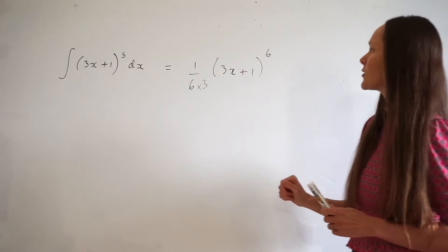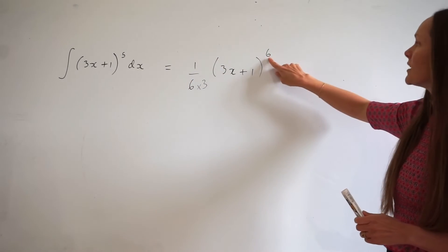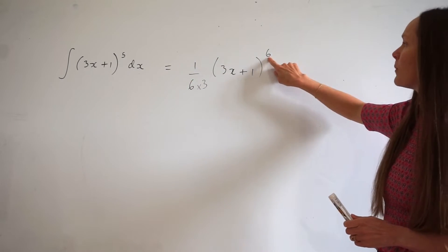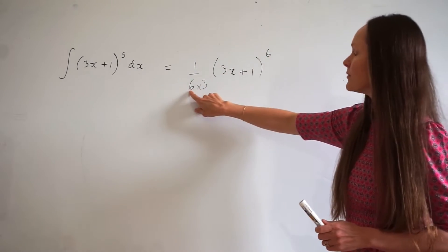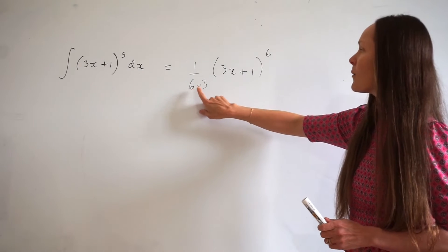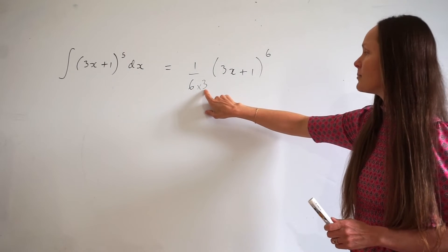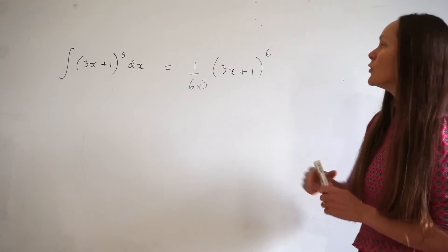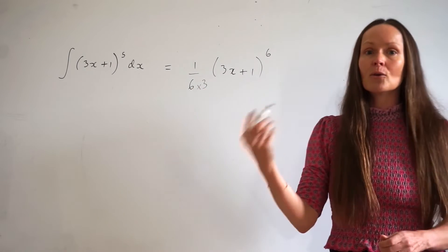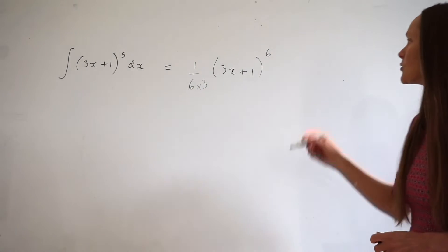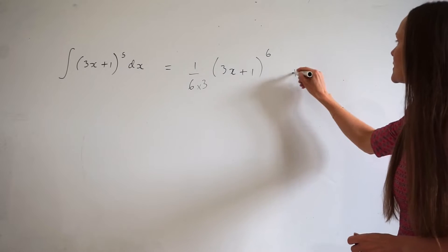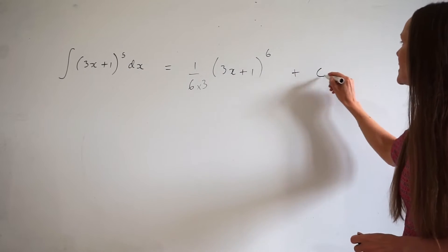So you can write it like that. To summarise: increase the power by 1, divide by the new power, and divide by the coefficient of x — not forgetting to add your constant of integration.